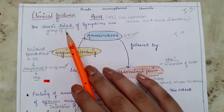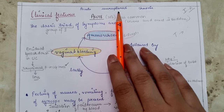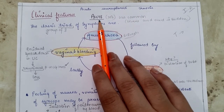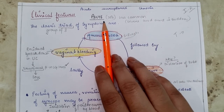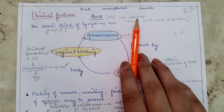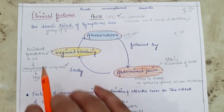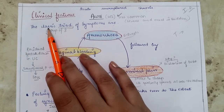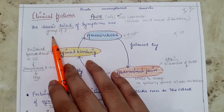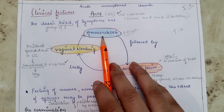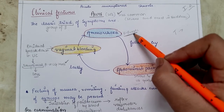Clinical features of tubal pregnancy are discussed under three headings: acute, unruptured, and chronic. Acute symptoms — severe with sudden onset — occur in 30% of cases, mostly when the tubes rupture. The classic triad is: amenorrhea (absence of menstruation for six to eight weeks), abdominal pain, and vaginal bleeding.